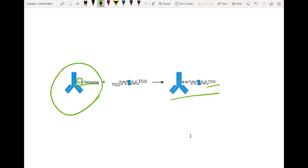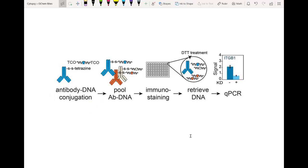Gel electrophoresis can then be used to prove that the reaction completed and to determine how much DNA was added onto the antibody, and that's it.